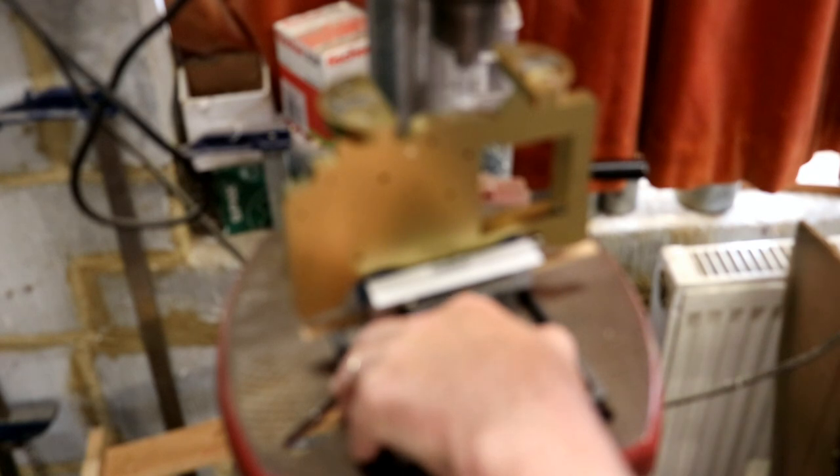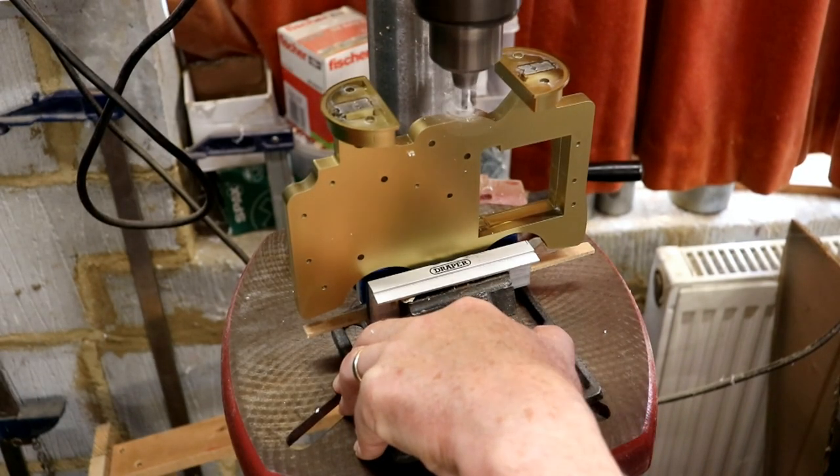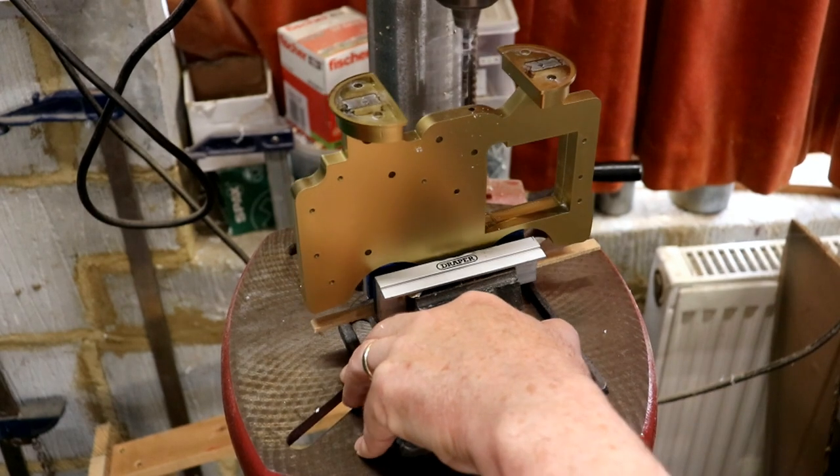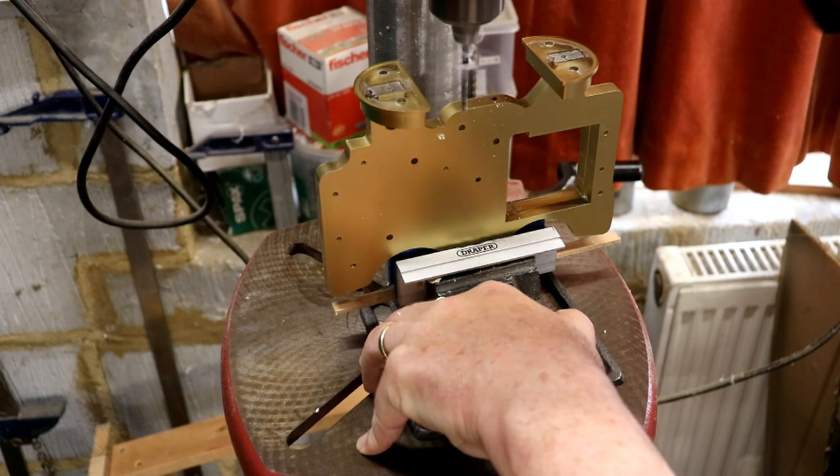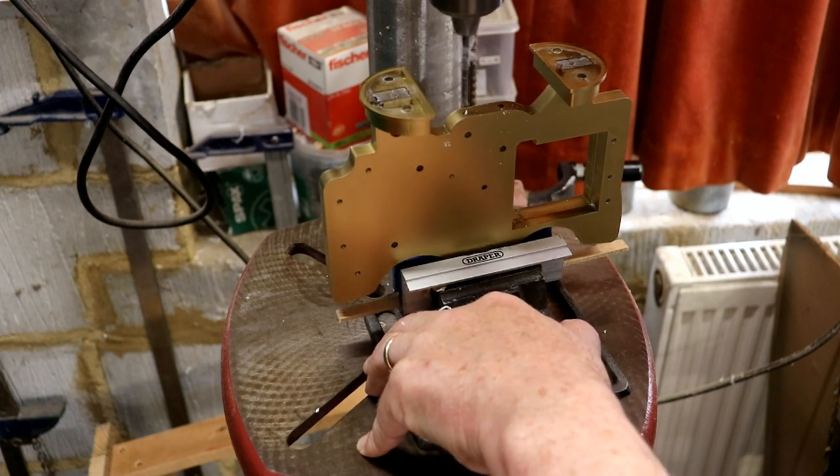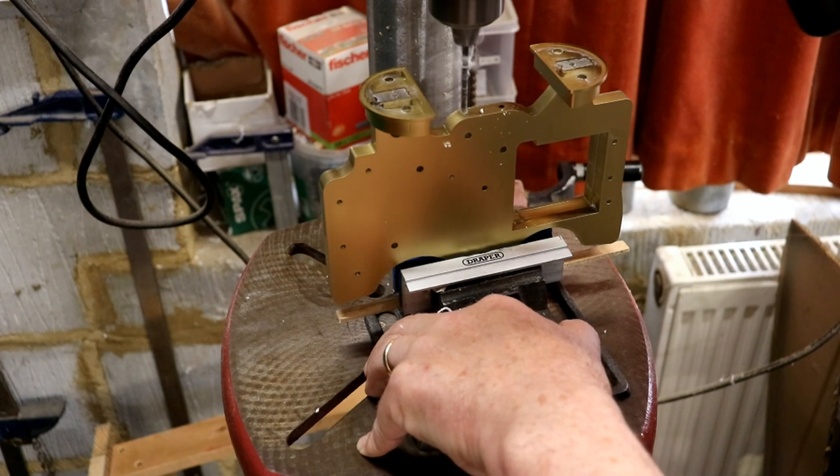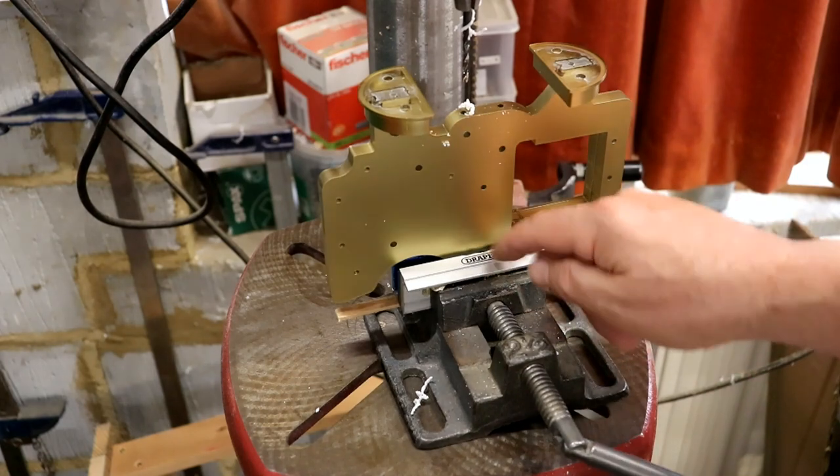Now this drill, drill bit, is 3.3mm, which is the diameter that you drill a hole before tapping it with an M4 tap.